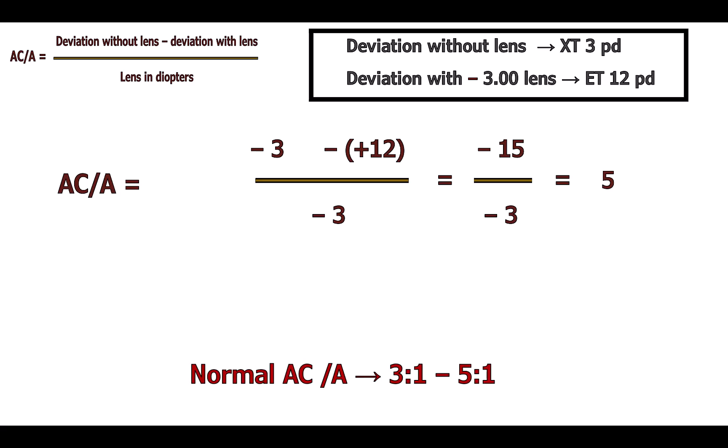Let's see this with an example. The AC/A ratio equals deviation without the lens minus deviation with the lens, divided by lens power. Note that the exotropia of 3 prism diopters is written as minus 3, and the esotropia of 12 prism diopters is plus 12. So: minus 3 minus 12 equals minus 15, divided by minus 3 equals 5. This is a normal AC/A ratio.